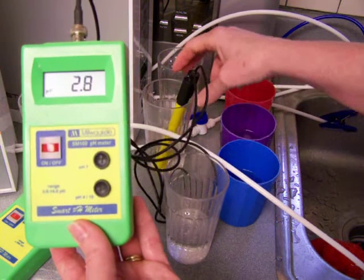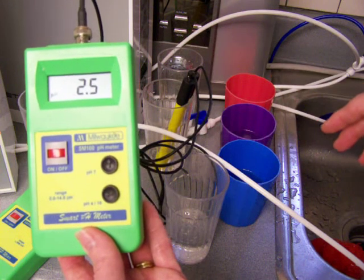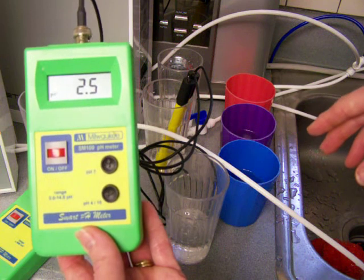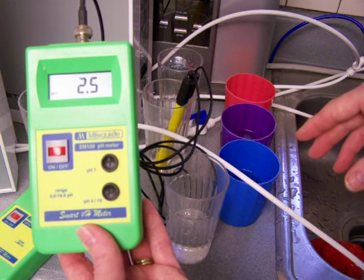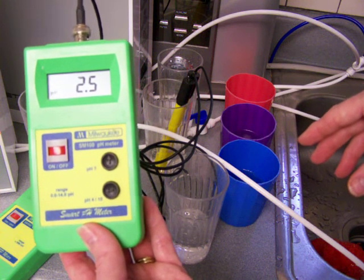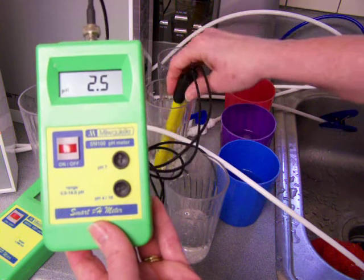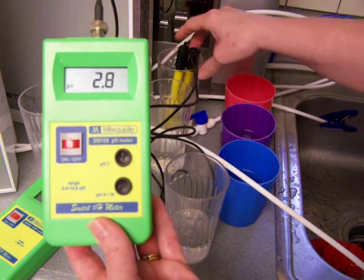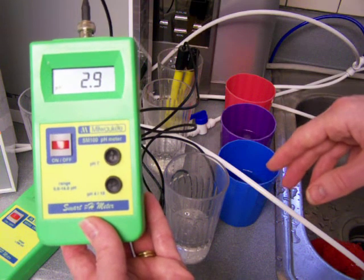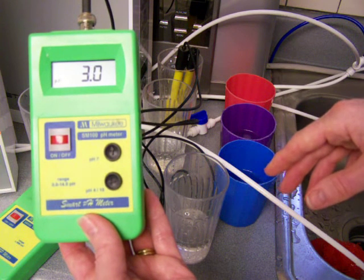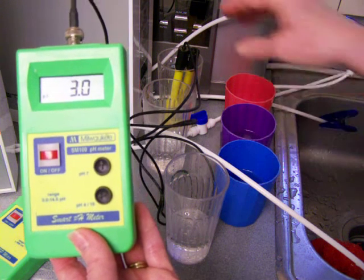Let's take a look at the Tyent Turbo. This is at the Turbo setting, 2.5. That's very good. And then the Athena, that's about a 3.0 pH.